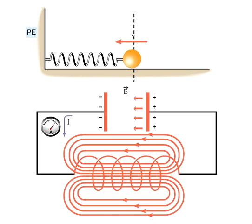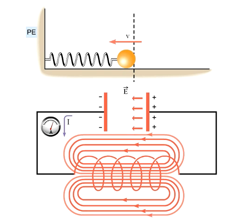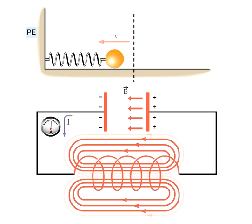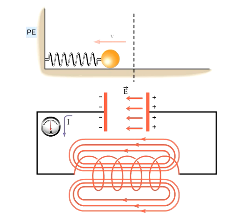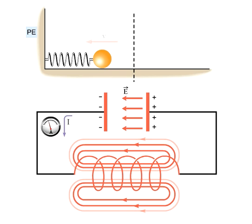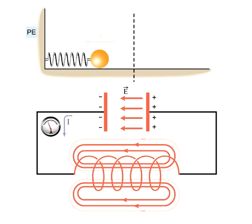The induced voltage in the inductor keeps current flowing in the circuit. This means that the magnetic field will decrease and the charge on the plates of the capacitor will start to increase, but with the opposite polarity. The energy of the system is going from being stored in the magnetic field of the inductor to the electric field of the capacitor. This is analogous to the spring being compressed after passing through its equilibrium length.